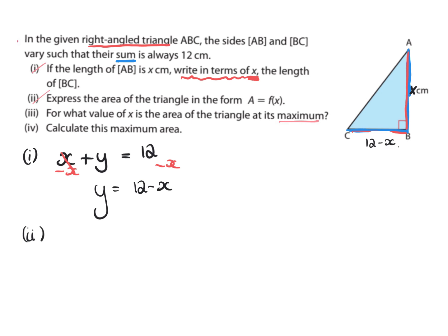Our second part then: express the area of a triangle in the form A = f(x). So A is the area. Area of a triangle, we learned it back in first year and possibly even in primary school: area of a triangle is base times perpendicular height all over 2. Something that we learned in primary school could potentially come up in our Leaving Cert.